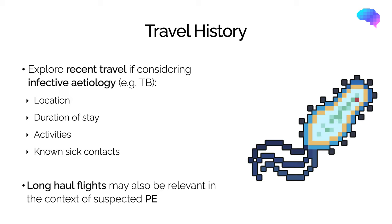If relevant, you should also take a brief travel history. This is especially important if the patient's symptoms are suggestive of an infective aetiology, particularly tuberculosis. Long-haul travel such as a long-haul flight may also be relevant as a risk factor for venous thromboembolism.